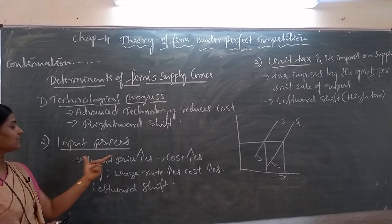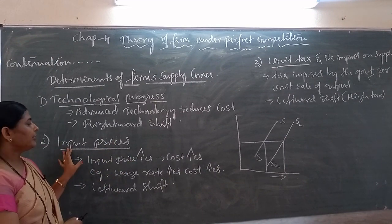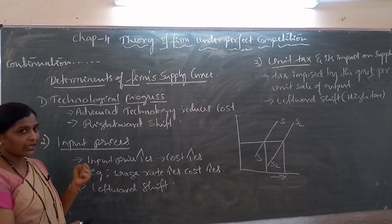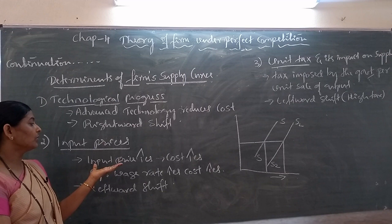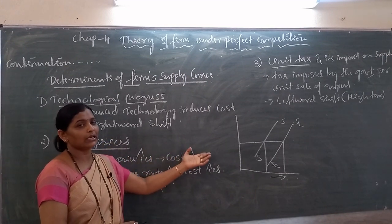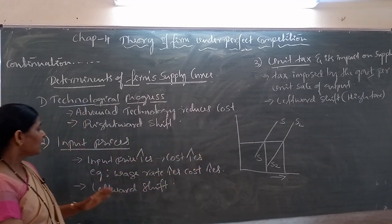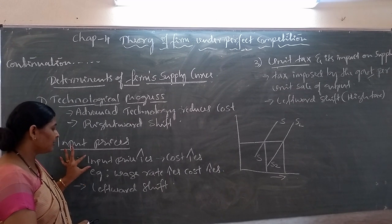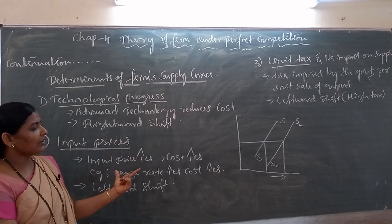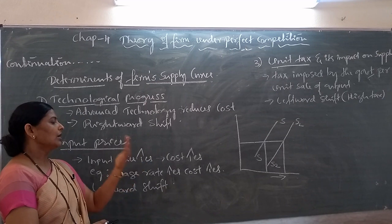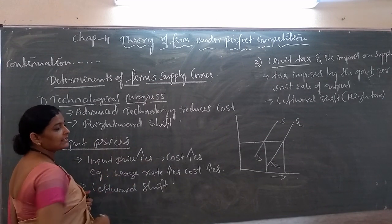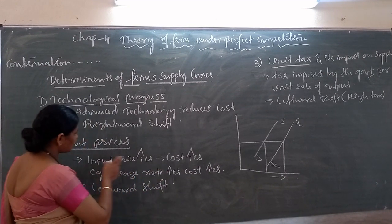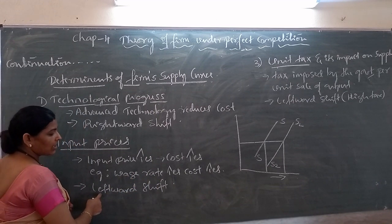Next, the second determinant is input prices. How do input prices influence the supply curve? If input prices or factors used in the market increase, then the cost also increases. If input prices decrease, then the cost of production decreases. If there is an increase in the price of factors or inputs, the supply curve shifts towards the left side. For example, wage rate — if wage rate is less, then a firm is able to employ more and more units of labor. If there is an increase in wage rate, as input price, then the supply curve shifts towards the left.